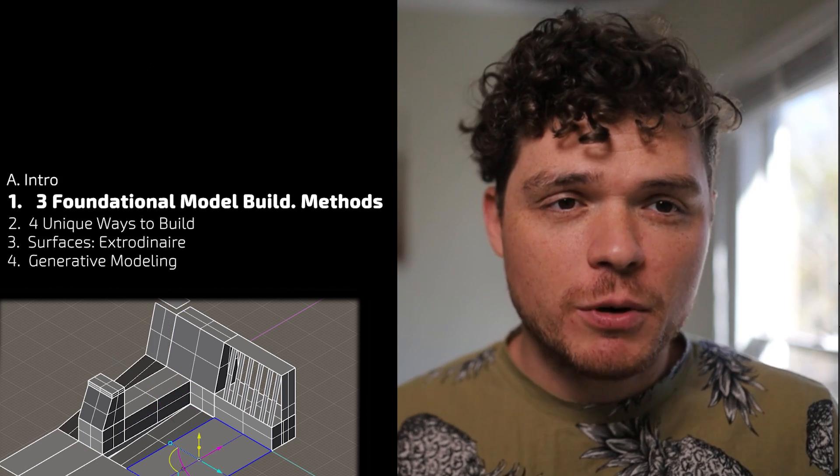Another foundational element to using this correctly is the gumball function. So let's get into how the gumball works. When you select an object, this gumball comes up and you can do a lot of things with it that are just super awesome. One of those things is you can move where the gumball is placed. Right now it is in the middle of the geometry, and you can go Control and move where you want the gumball to reference. Now when you do a rotate, it's going to rotate off that point.